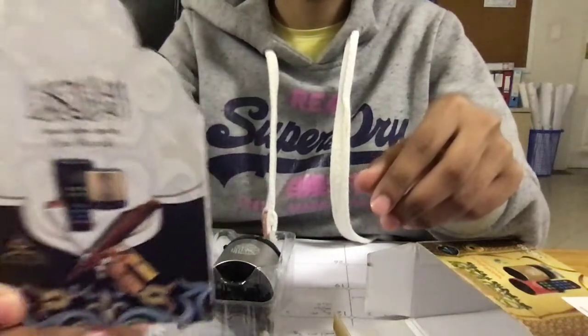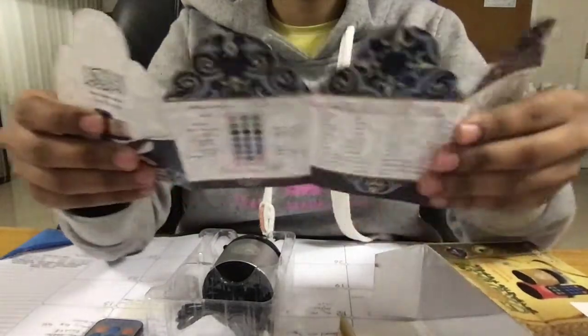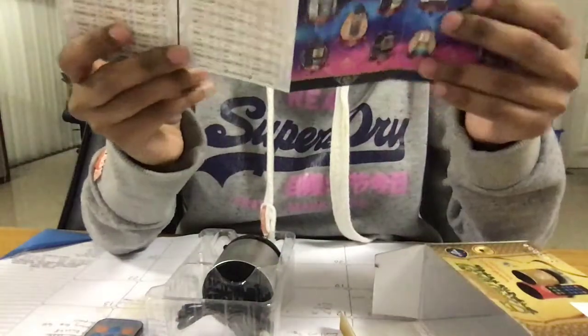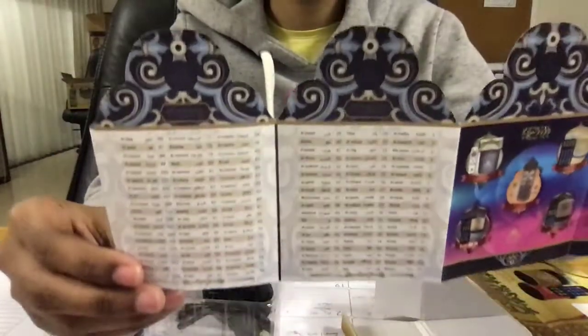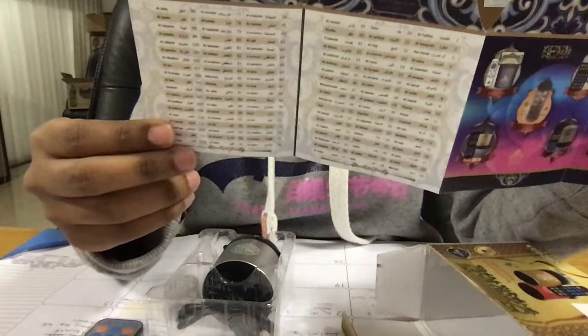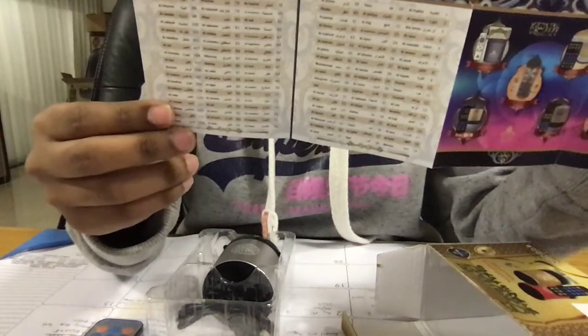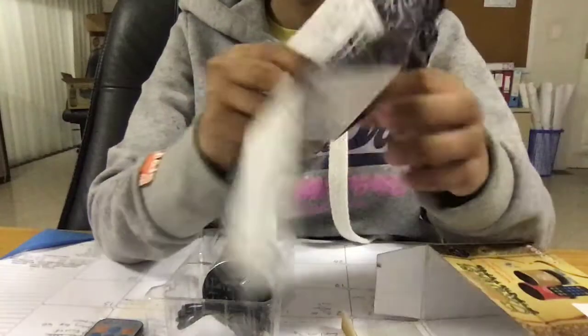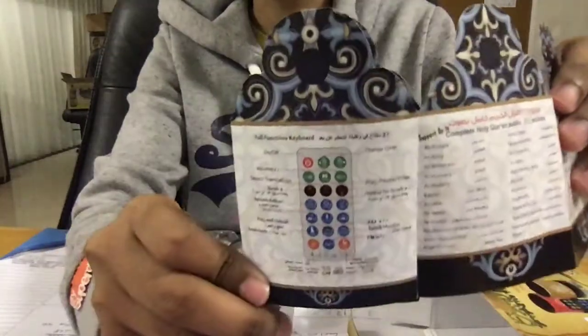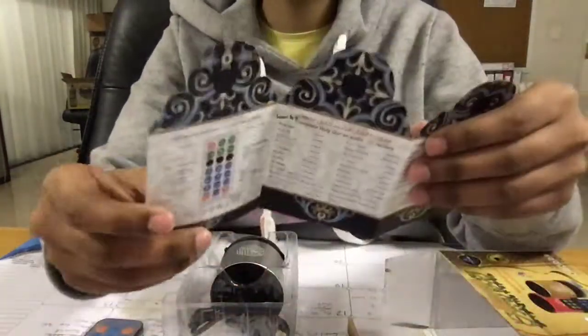User manual actually looks quite important, not one of those you can just throw away. It tells you the translations it has: English, Urdu, Chinese, Malay, Somalian, Thai, Tamil, Russian, Farsi. Basically explains the remote to you, although that doesn't really need to be explained I guess.